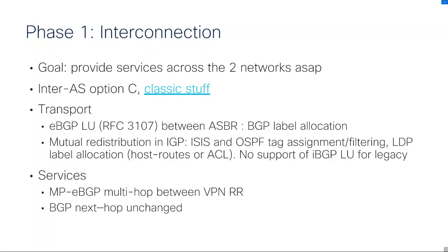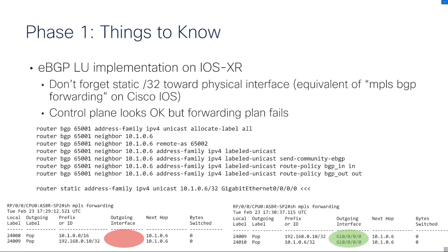We had to redistribute BGP into IGP because not all PEs supported iBGP label unicast flavor due to legacy constraints, so we had to deal with mutual redistribution, which is always tricky. We used the well-known trick of setting tags in IGPs — both OSPF and ISIS support tags. You set tags in one direction and for the other redistribution you deny the tag you just set, to avoid loops. For the route reflectors, MP-BGP multi-hop configuration. Remember to implement BGP next-hop-unchanged so that BGP next-hops are propagated between SP1 and SP2.